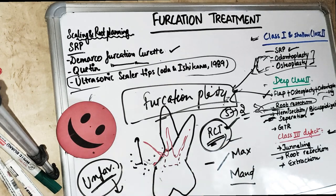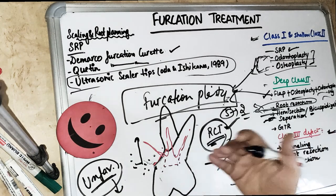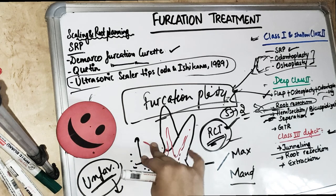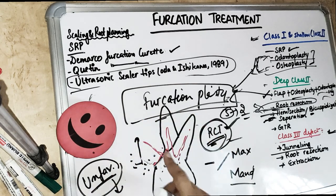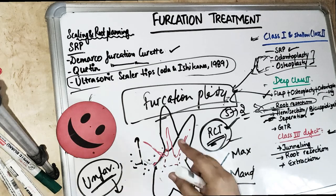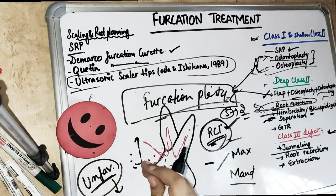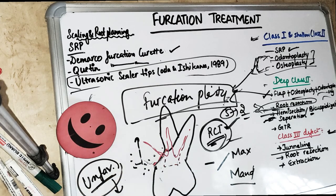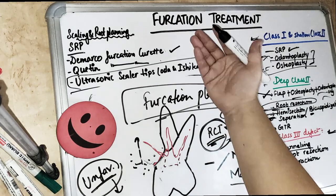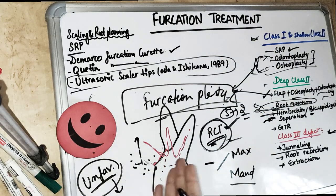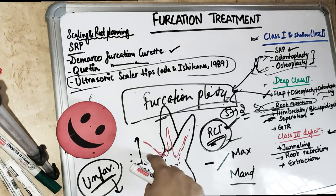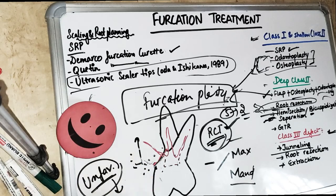Root resection is done when the maximum attachment loss is confined to one root. If it is spread all over, there is no use doing root resection. Indications include Grade 2 or Grade 3 furcation, dehiscence, root perforation, fracture, root caries, or any violation of biological width related to that root.